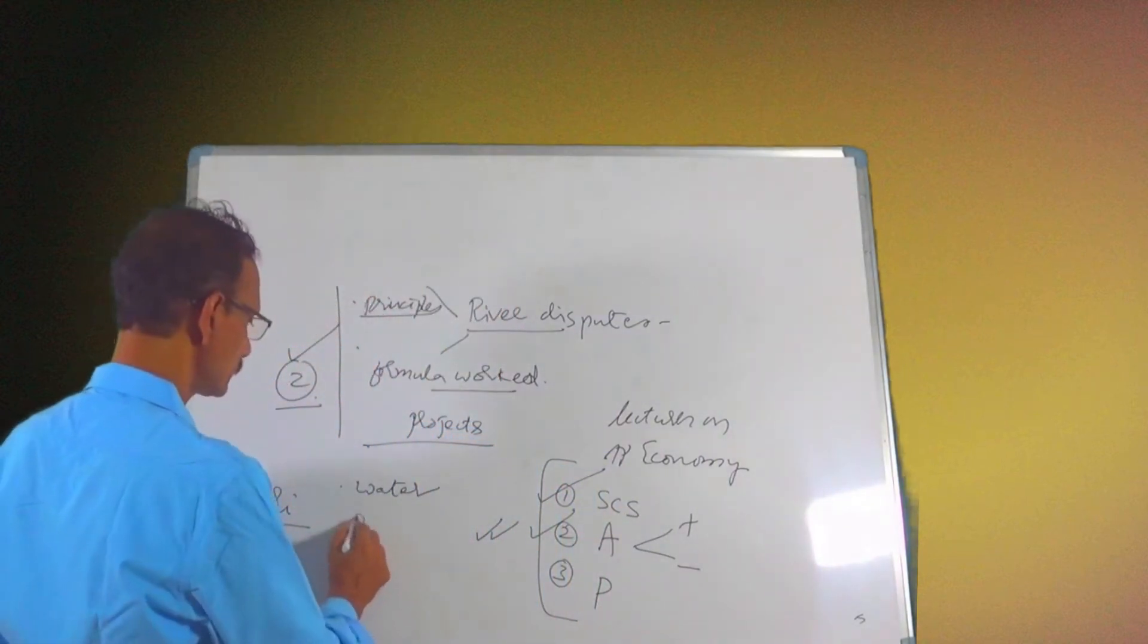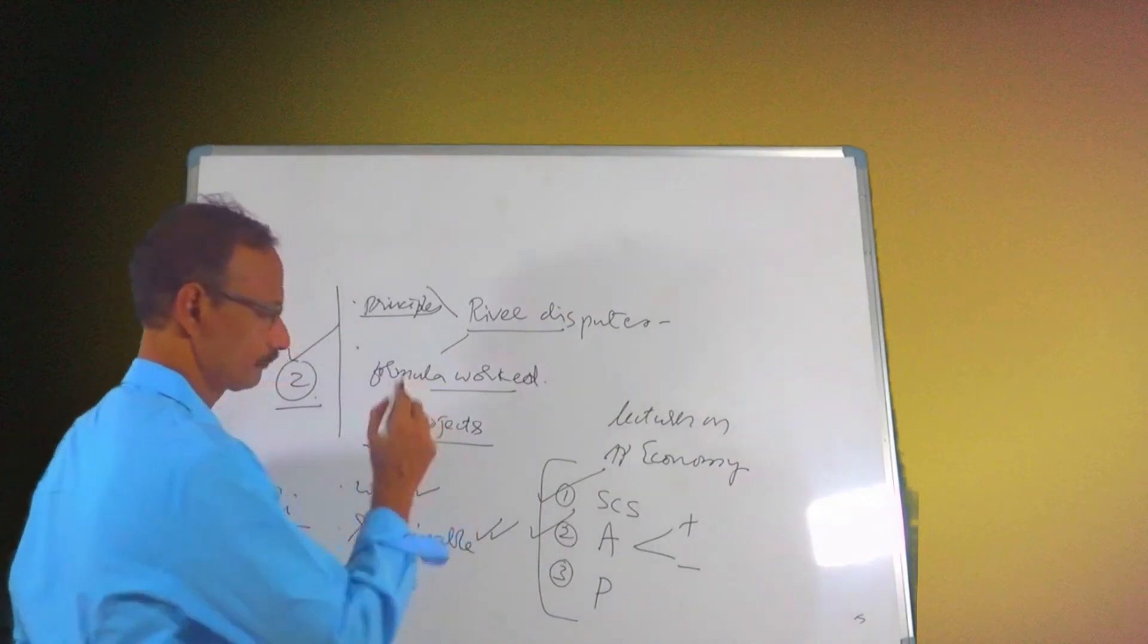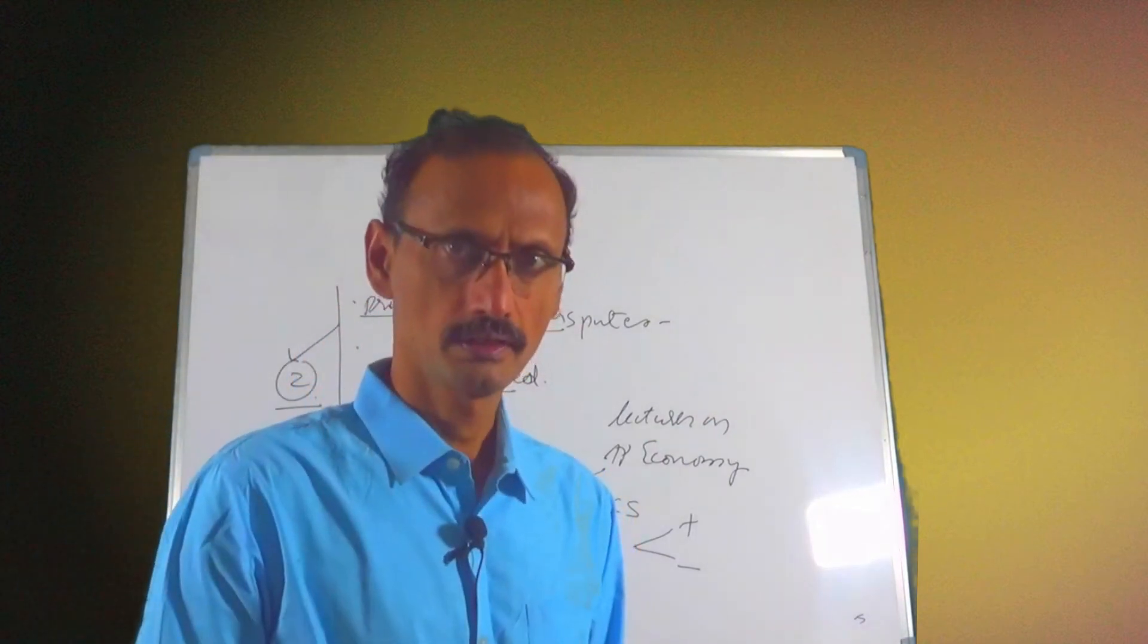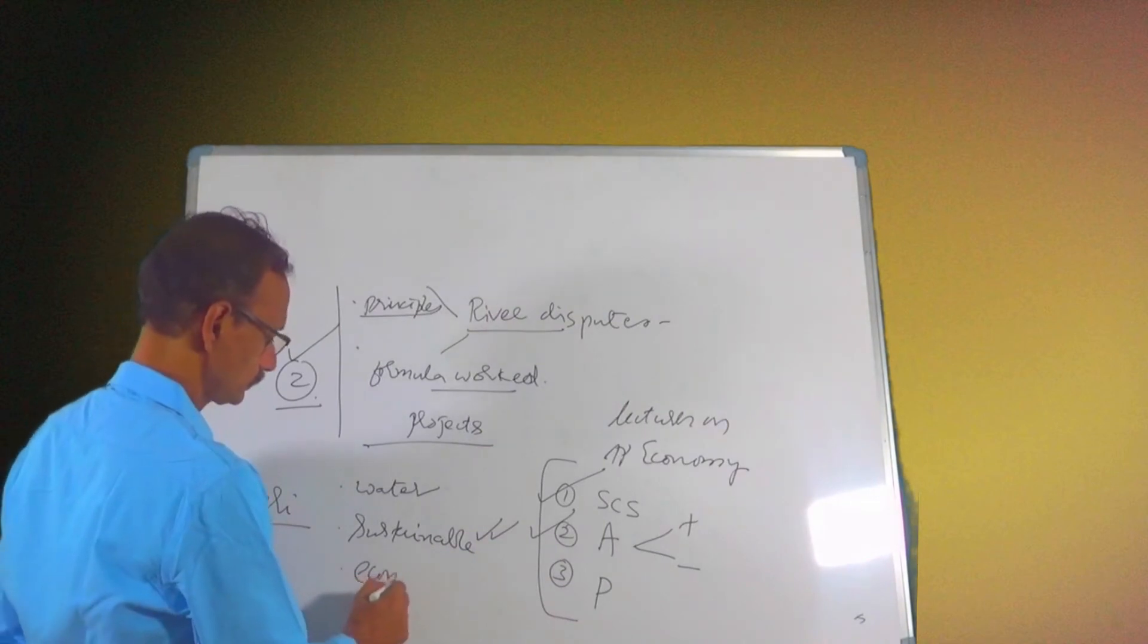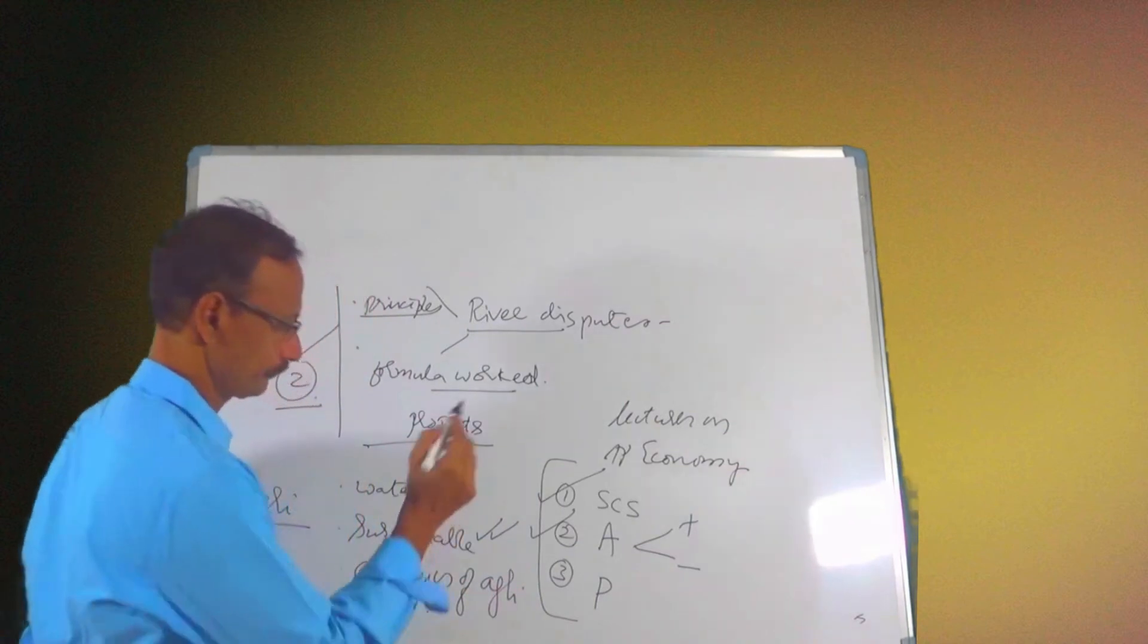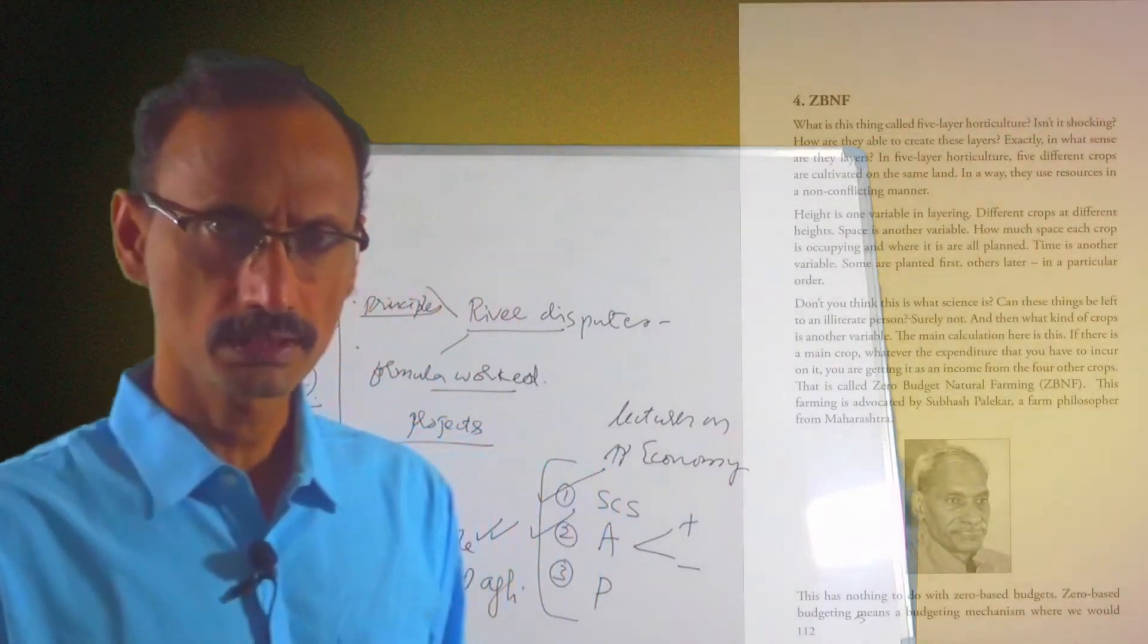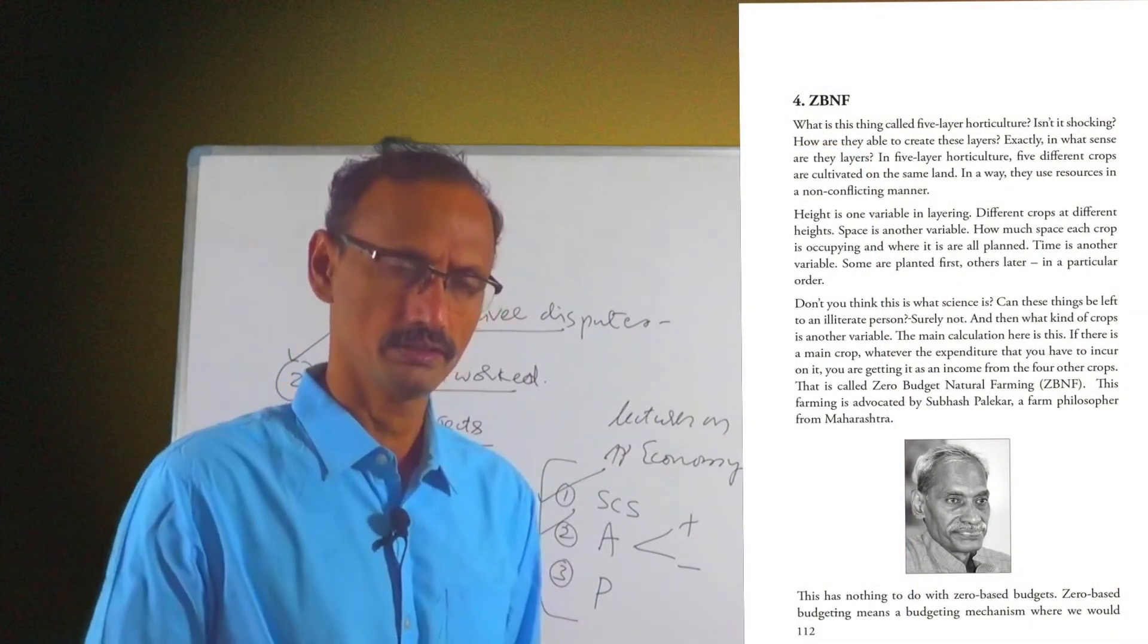And then it discusses sustainability of agriculture. Natural farming. It discusses. And then it discusses economics of agriculture. Why farmers are in this crisis? What is the source of agricultural crisis?